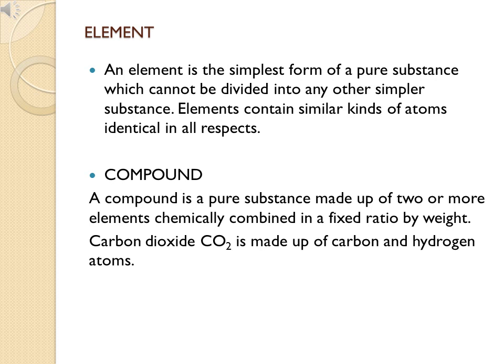A compound is a pure substance made up of two or more elements chemically combined in a fixed ratio by weight. To get a compound, two or more different elements must combine chemically in a fixed amount. For example, carbon dioxide (CO2) is made up of carbon and oxygen — one carbon atom and two oxygen atoms. If you take only one carbon and one oxygen, you get carbon monoxide, not carbon dioxide.